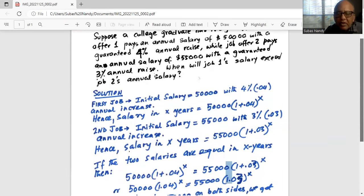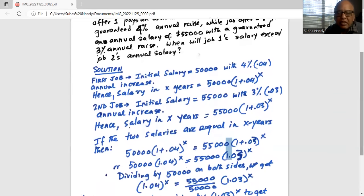If the two salaries are equal in X years, then $50,000 multiplied by 1.04 exponent X is equal to $55,000 multiplied by 1.03 exponent X.